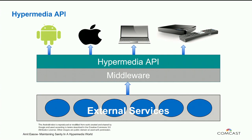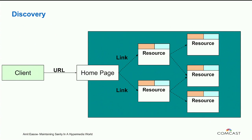This is a quick snapshot of what a hypermedia API looks like. External services talk to the middleware, and we have built a hypermedia API layer on top of it so that the same API is called by every single one of these clients — Android, iOS, the web, and set-top box. So the same experience is made available to all these different devices using the same API. A client calls the home page, and the home page in turn calls a bunch of resources through links.